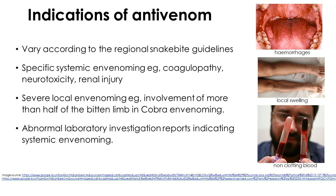Presence of organ-specific signs of envenoming is a clear indication for administration of antivenom. Several local effects of envenoming are also an indication — for example, swelling or necrosis of more than half of the limb due to a cobra bite is considered an indication in the Sri Lankan setup, though local effects from other snake bites are not. Any abnormal laboratory investigation showing systemic envenoming is also an indication, such as abnormal PT-INR or APTT indicating coagulopathy, or abnormal serum creatinine and blood urea suggesting renal injury.